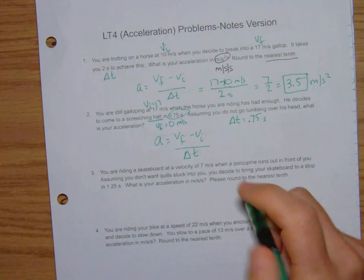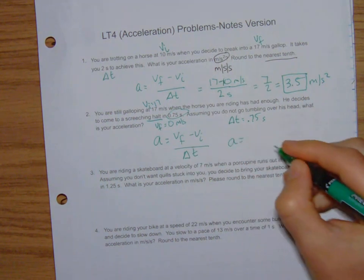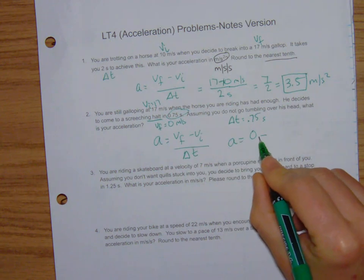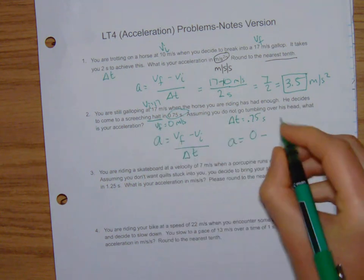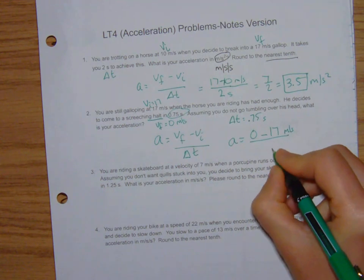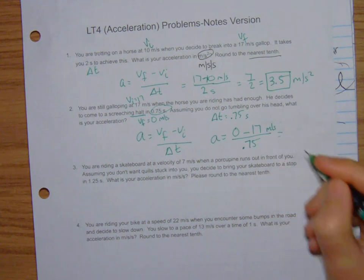Most common mistake is people see a 0 and say I'm just going to ignore it because a lot of times in math class 0s don't matter. 0s matter. Because if you think about it, if we have to slow down and our final speed is 0, we should end up with a negative acceleration. So we subtract that original 17 and we divide it by the time which is 0.75.